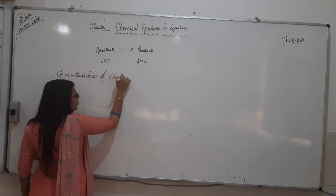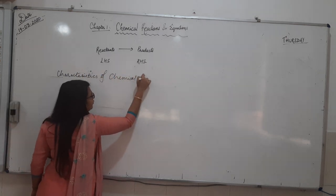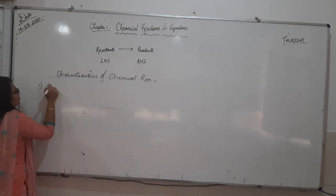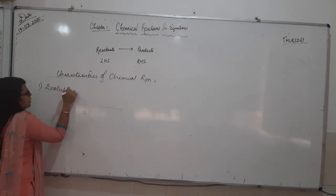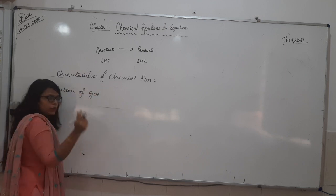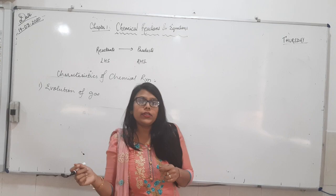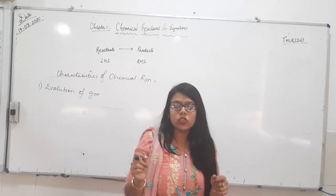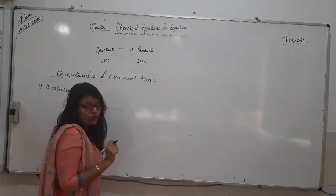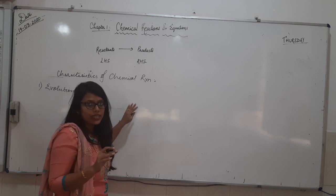In the characteristics of chemical reactions, the first characteristic is evolution of gas. Like in a reaction, if I am doing a reaction in a test tube and if a gas is evolved, in that condition we can determine that a reaction is taking place.